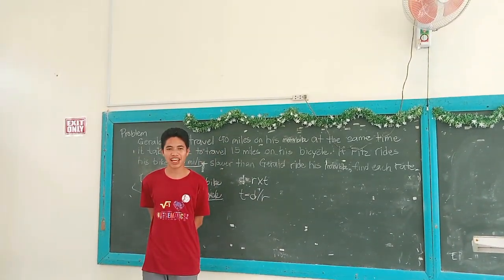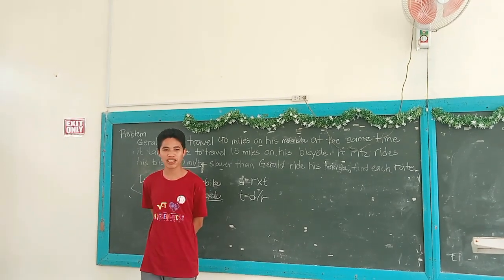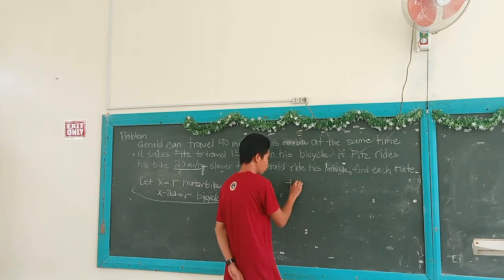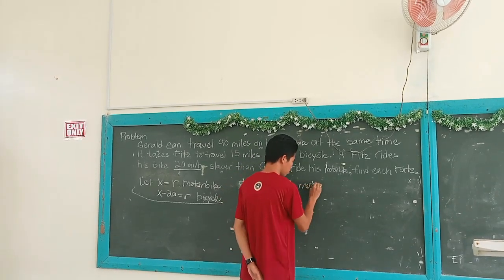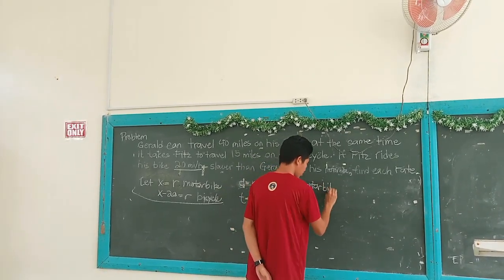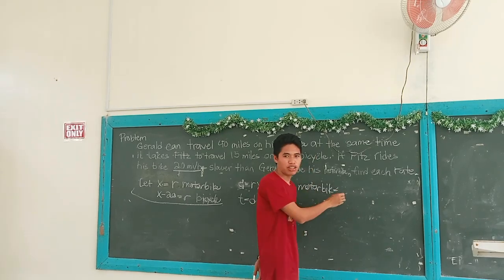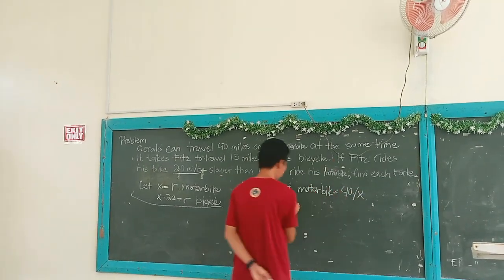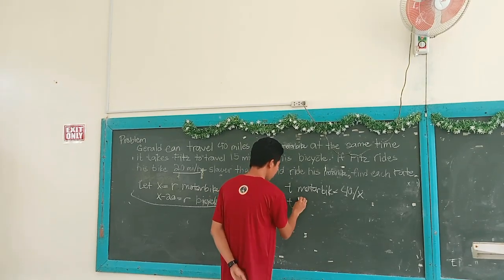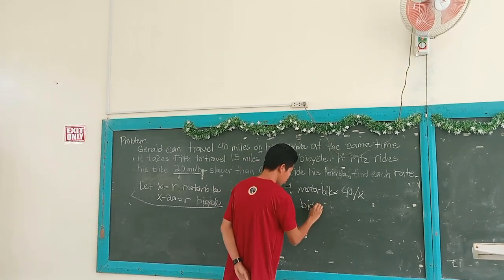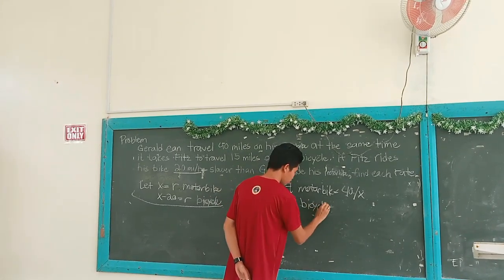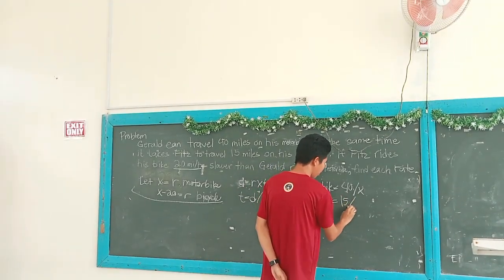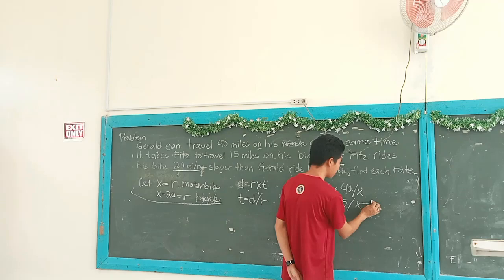Now let us write the time expressions for the motorbike and the bicycle. The time of the motorbike is equal to 40 over x. And the time of the bicycle is equal to 15 over x minus 20.